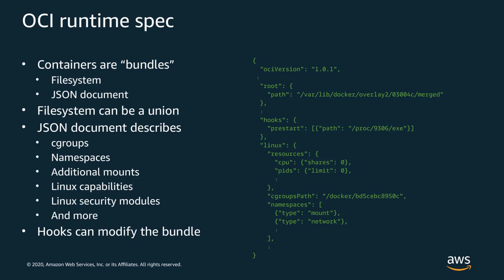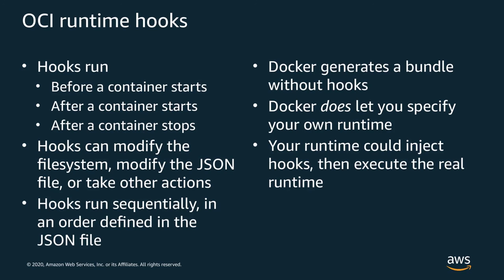The Open Containers Initiative has a specification for runtimes that defines the interfaces used for running containers. The unit of a container in the runtime spec is a bundle — bundles consist of a file system and a JSON formatted file that describes how the container should be configured. The file system can be a union like Docker does with its layers, but it could also be any arbitrary directory or device the runtime supports. The JSON document describes all the basic Linux technologies that comprise a container, including cgroups and namespaces. The spec also allows for hooks that can mutate the bundle at different points in the lifecycle, influencing how a container is configured and instrumenting its lifecycle.